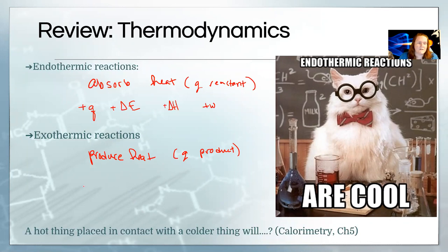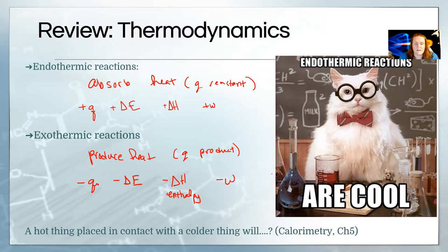So what it means if something's exothermic is it's producing heat. It has a negative change in energy, so it goes down in energy from where it started. Its enthalpy is also negative — enthalpy is H. That's a vocab word you should know. And finally, work is negative.